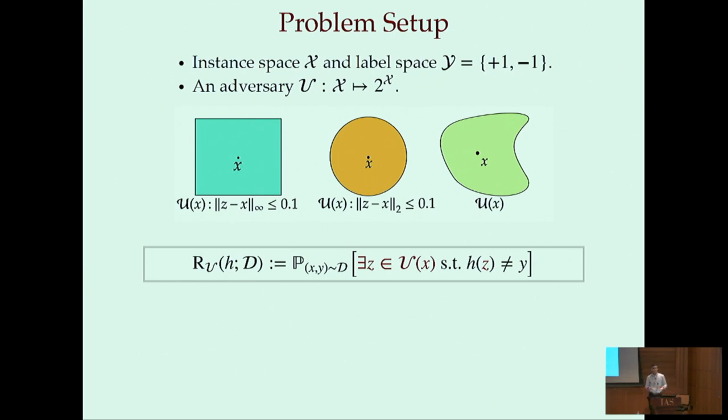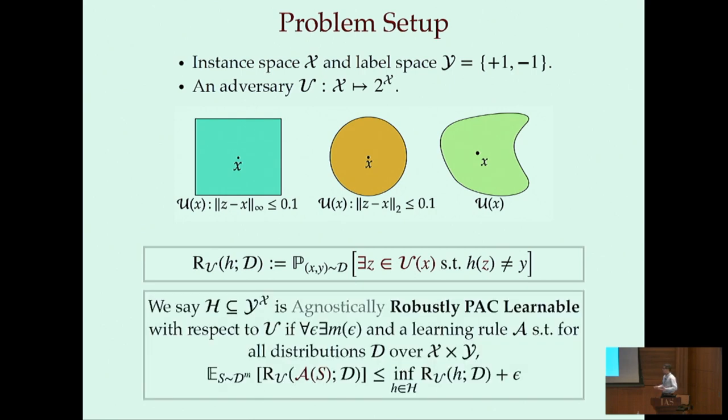So now given a class of functions H that contains predictors that map from X to Y, we want to know whether it's possible to learn from a finite sample a predictor that competes with the best robust predictor in the class. More formally, we say a class of functions H is robustly PAC-learnable with respect to U if for all epsilon there exists a sample size and a learning rule such that for any distribution the learning rule will succeed in outputting a predictor that is at most epsilon worse from the best robust predictor in our class H. So now with this definition in mind, we want to know which classes of functions can we robustly PAC-learn. In particular, can we robustly PAC-learn hypothesis classes with finite VC dimension?